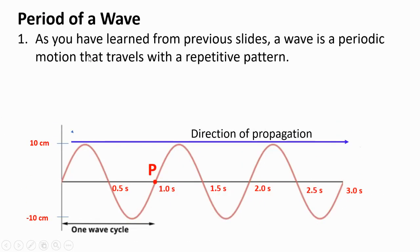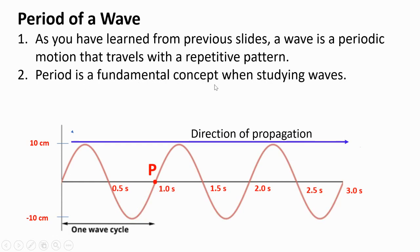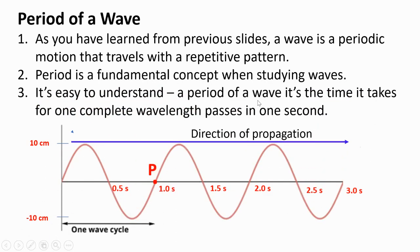Period of a wave. As you have learned from our previous lesson, a wave is a periodic motion that travels with a repetitive pattern. Period is a fundamental concept when studying waves. It's easy to understand. A period of a wave is the time it takes for one complete wavelength to pass. In this picture, we have a series of waves traveling in one direction, and the horizontal line shows time increasing as the wave travels.